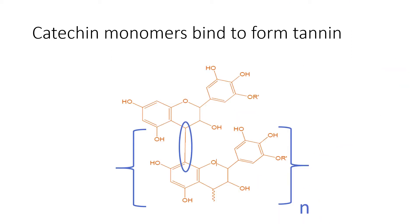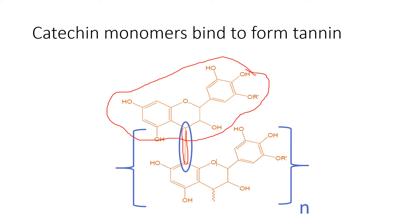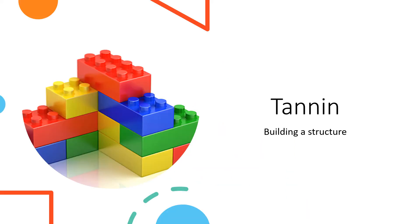These monomers bind together to form what we know as tannin. This is actually a catechin gallate, but the idea is the same — we have these catechin-like tannins binding together, and these chains can go on for basically forever, so n could be really anything. These little guys are binding up together to form longer chains of tannin, which are less bitter. Now we're starting to put the blocks together and build a structure, and that structure is actually the palate structure of our wines — if we're talking about reds.